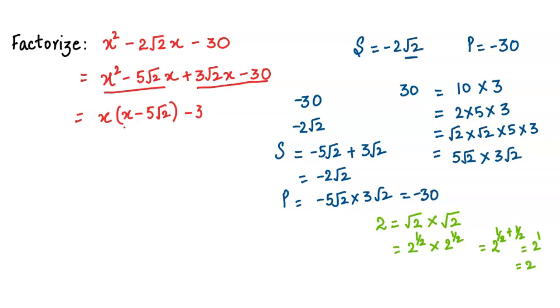When I take out 3√2, I am left with x, but what do I get here? When you divide -30 by 3√2, you get -5√2. So here I write -5√2, and I take out the common factor expression.